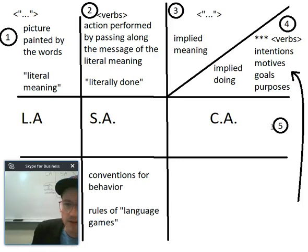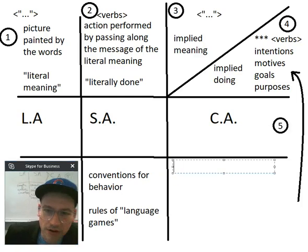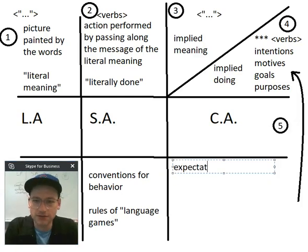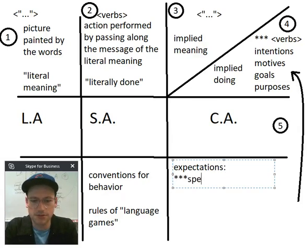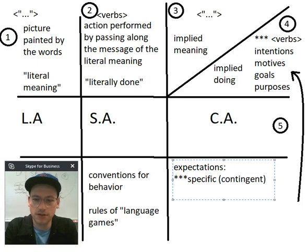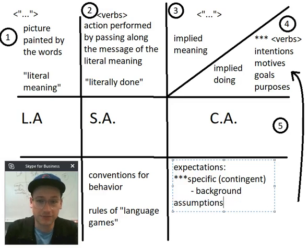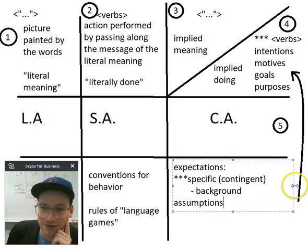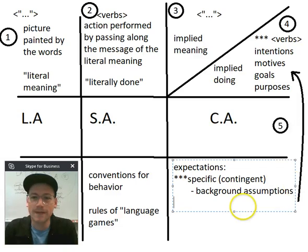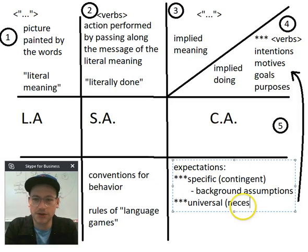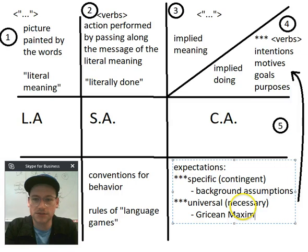Let me clean up the chart for everyone on YouTube. So: expectations can be specific and contingent — those are defined by our background assumptions, which are always different; we all have different background assumptions about the world. And then we have universal, necessary expectations — those are defined by the Gricean maxims.